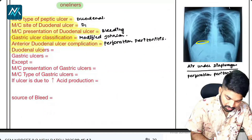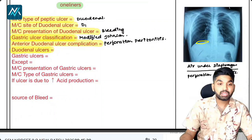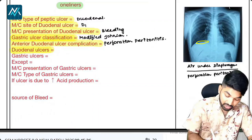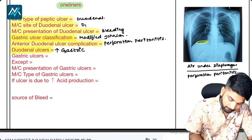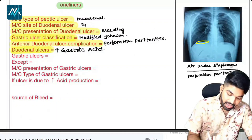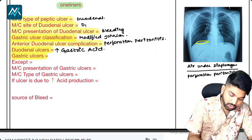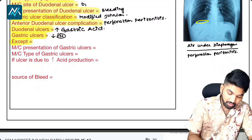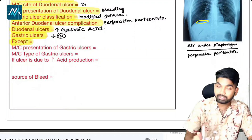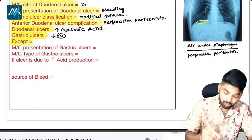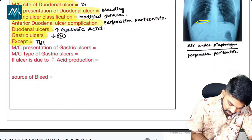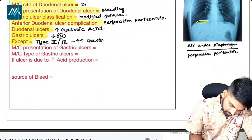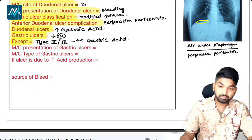Duodenal ulcers — what is the main cause? It is due to increase in gastric acid. And gastric ulcers — there will be decrease or normal gastric acid. Remember, except type 2 and type 3 gastric ulcers, where there will be an increase in gastric acid.